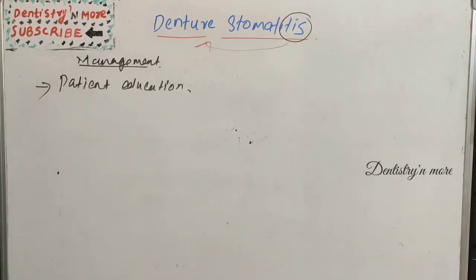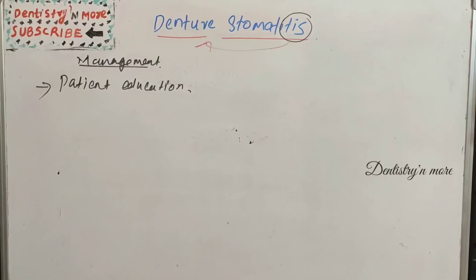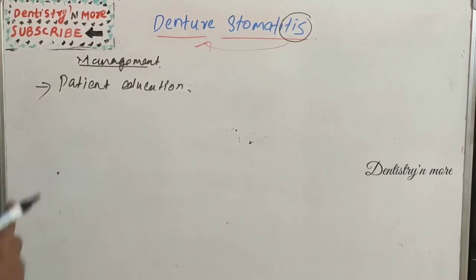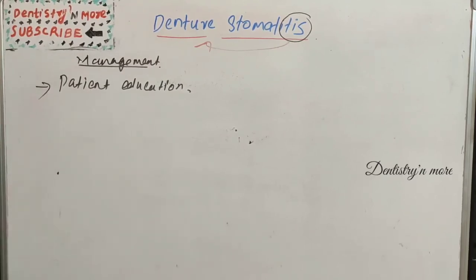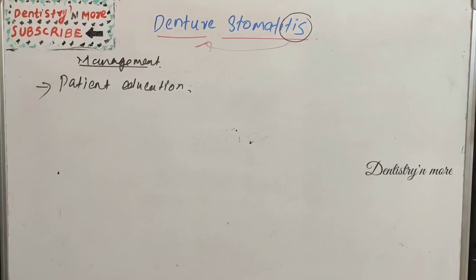For management, the first step is patient education — educating the patient about denture stomatitis, its causes, and how it can be managed. Give proper instructions on how to massage the maxillary and mandibular ridges, and ask the patient to keep the denture in water during the night. Hygiene instructions on how to clean the denture and oral cavity should also be provided. Treatment of underlying diseases such as diabetes or anemia must be addressed, as uncontrolled systemic disease prevents good outcomes.